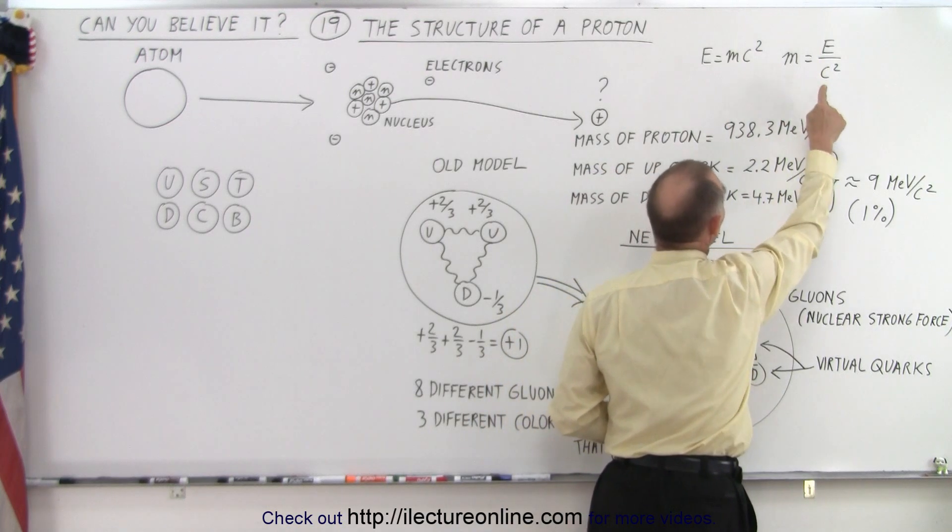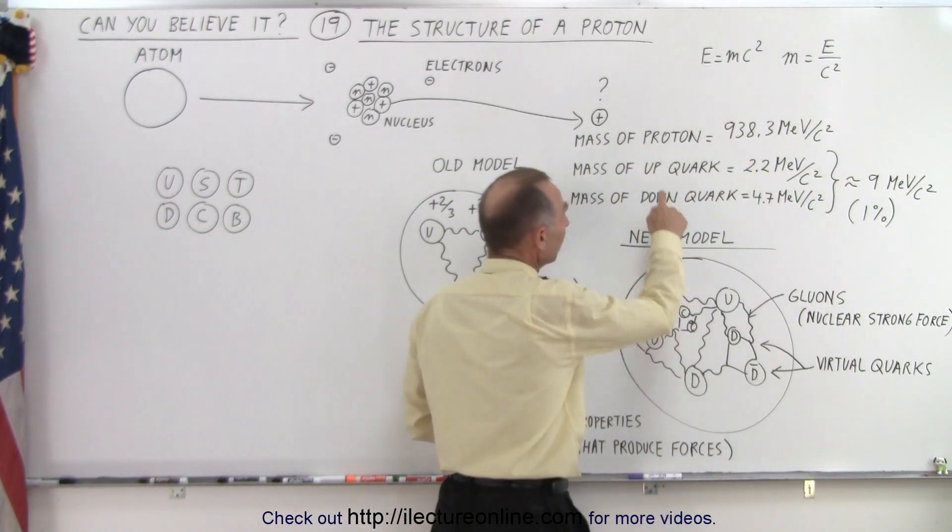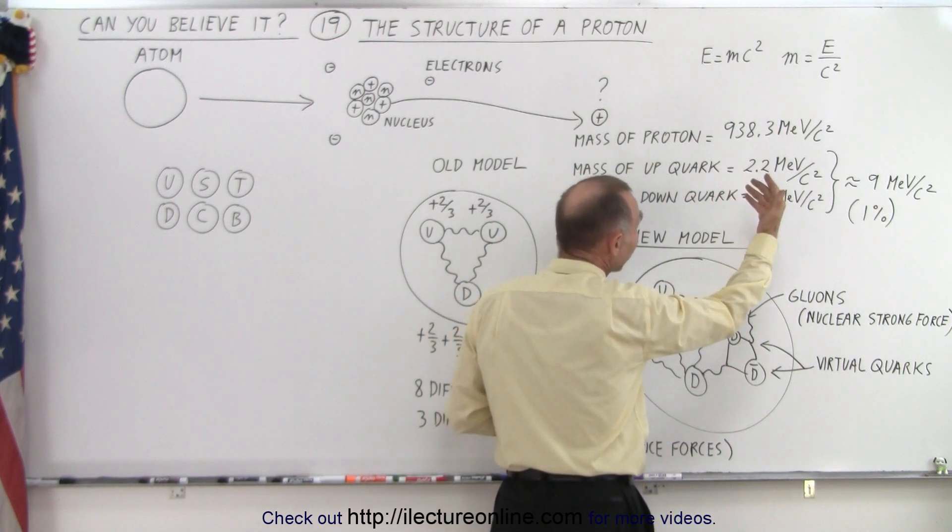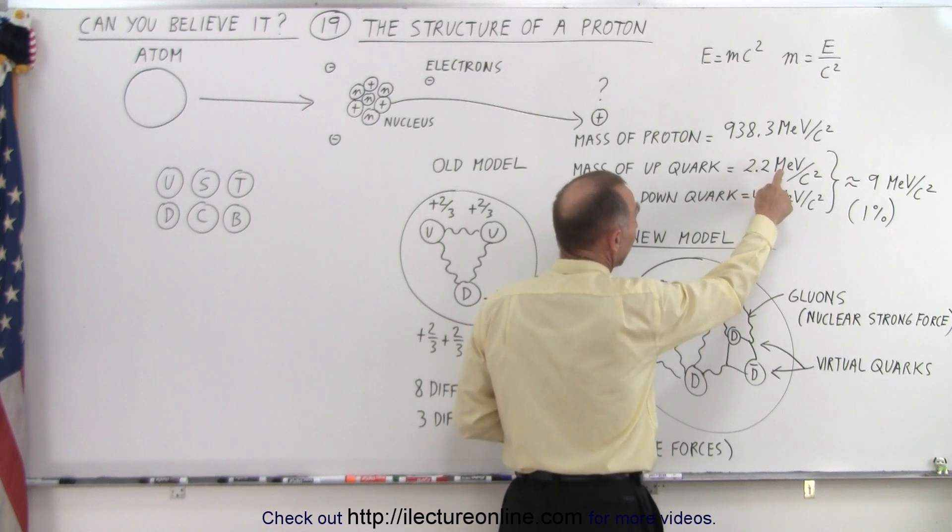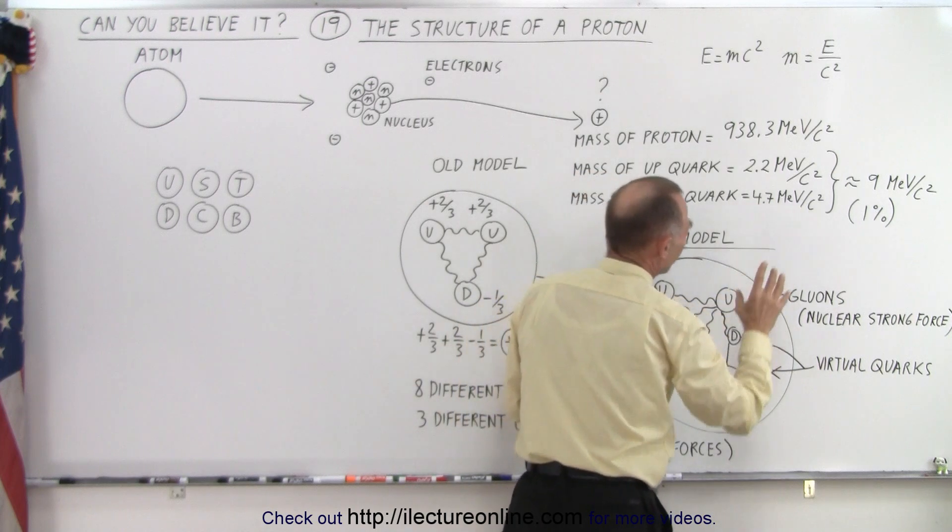M is equal to E over C squared. So energy divided by C squared represents mass. So for the up quark, we have a mass equivalent of 2.2 MeVs per C squared. And the mass of a down quark is 4.7 MeVs per C squared. Those aren't exact values because we still don't know the exact mass, but those are pretty close.